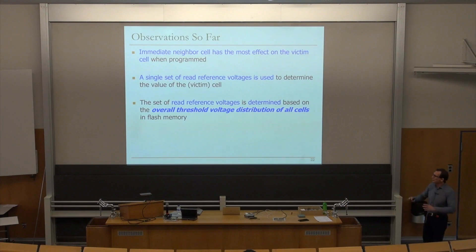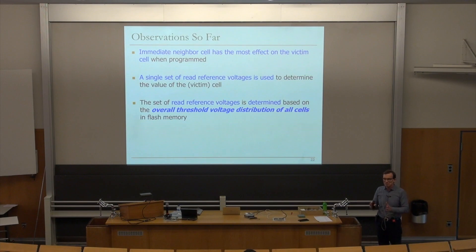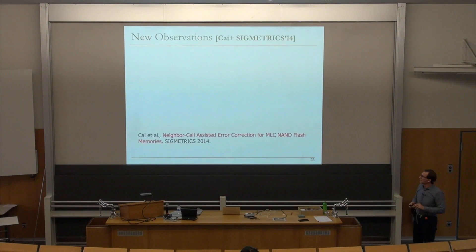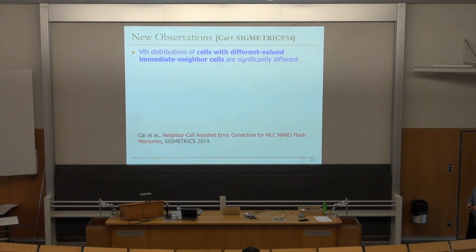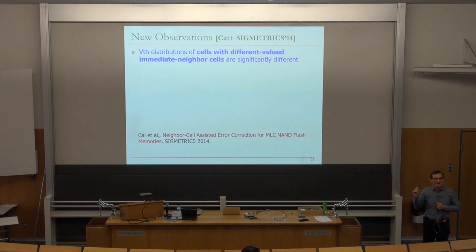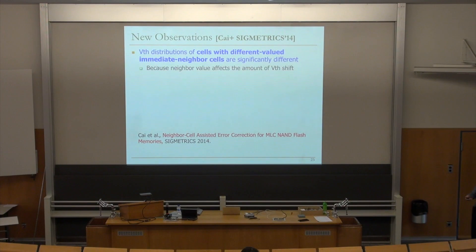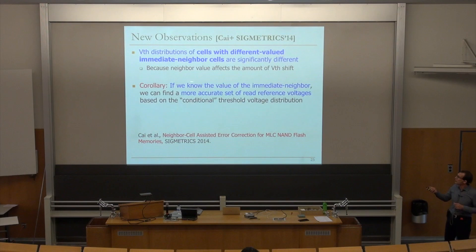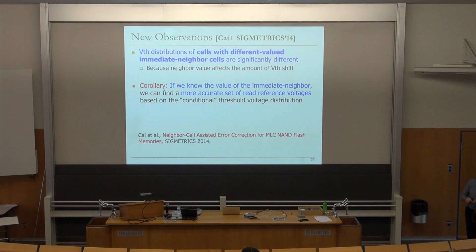If you make the threshold voltage distribution conditional on the adjacent cell's value, you can see that the distribution is very different. The threshold voltage distribution of cells with different valued immediate neighbor cells are significantly different because the neighbor value affects the amount of threshold voltage shift. So if we know the value of the immediate neighbor cell, we can find a much more accurate set of re-reference voltages based on the conditional threshold voltage distribution.